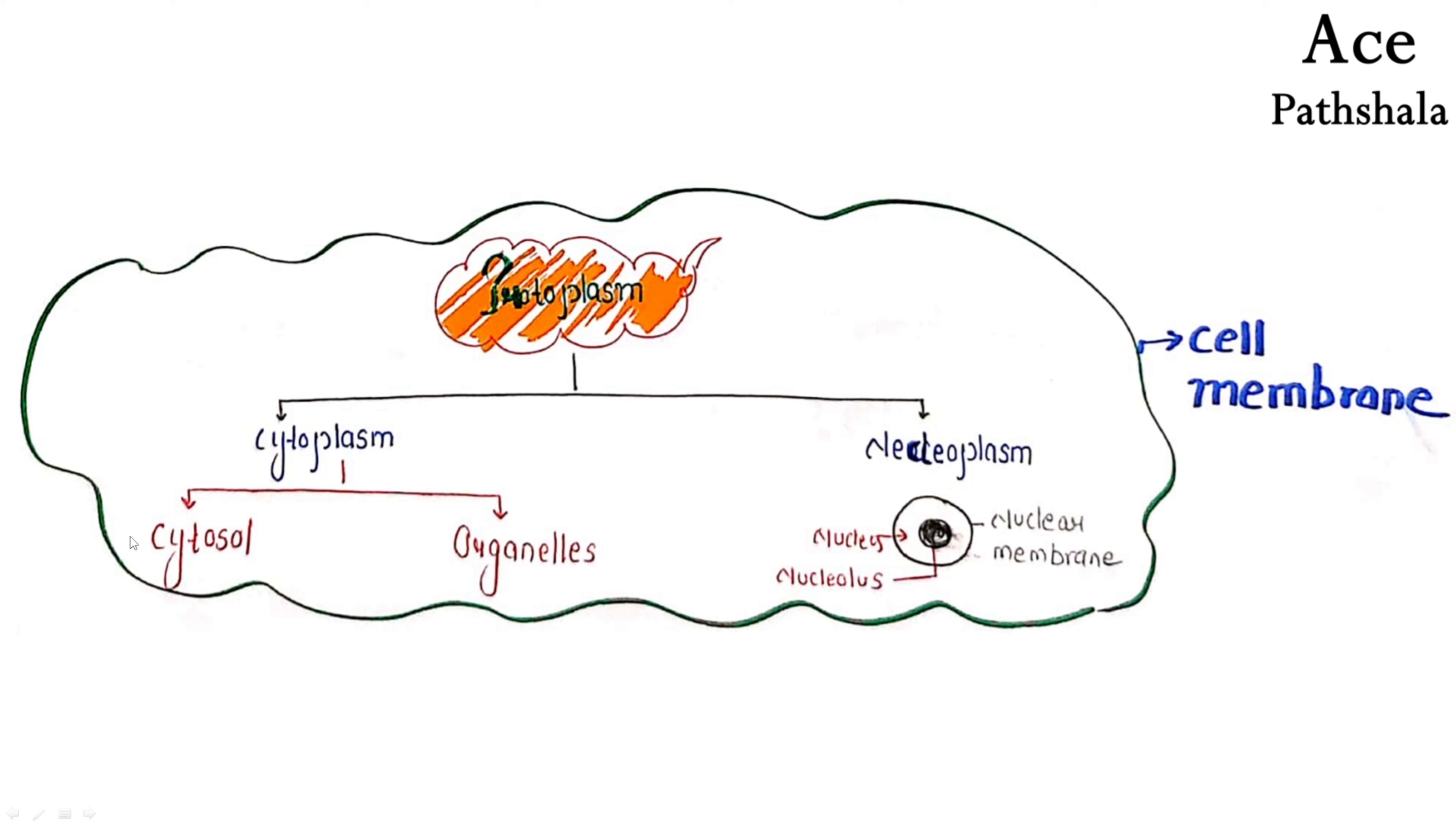And the cytoplasm will contain cytosol plus organelles. So I hope this will be very simple to understand. That in the cell, there is cytoplasm plus nucleoplasm. They both together form protoplasm. And the cytoplasm is divided into two parts: cytosol and organelles.